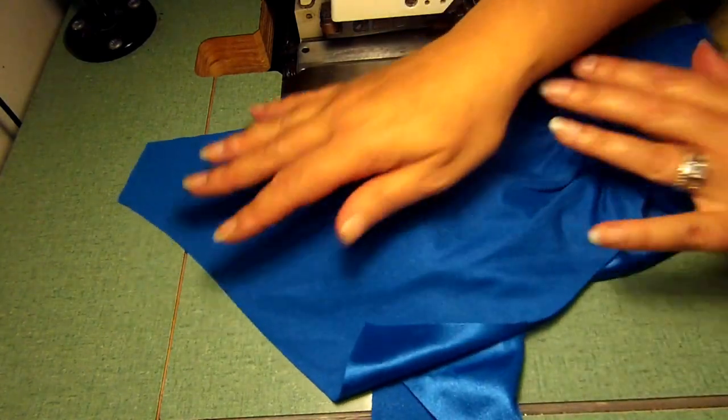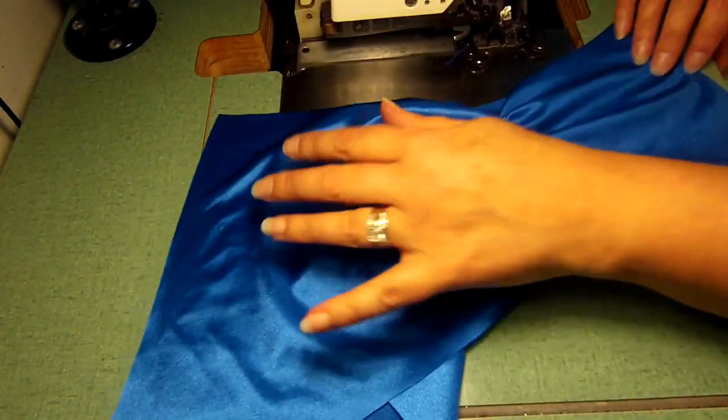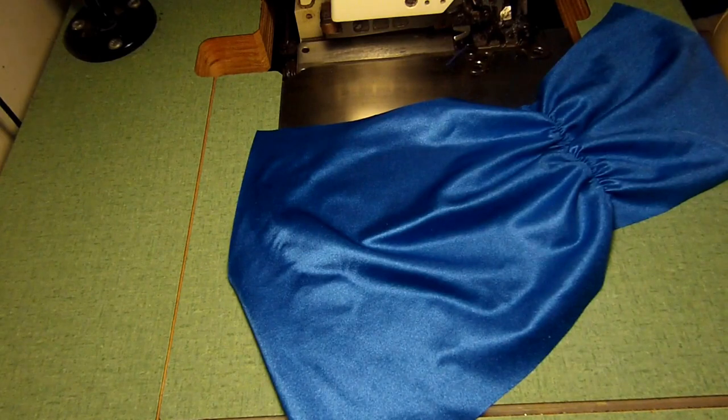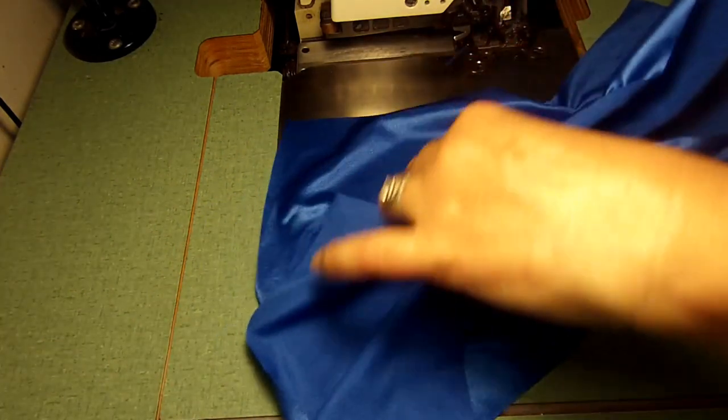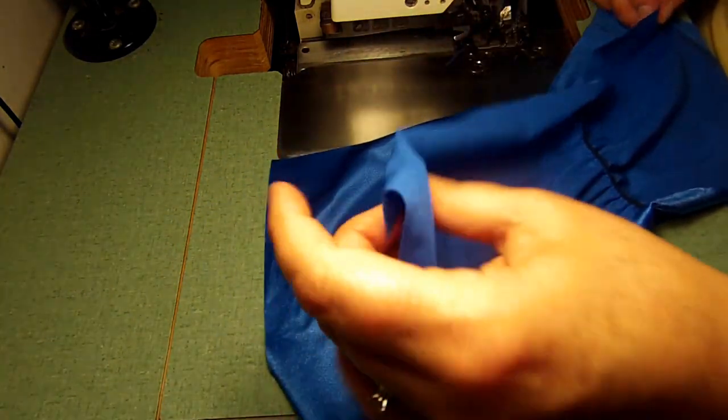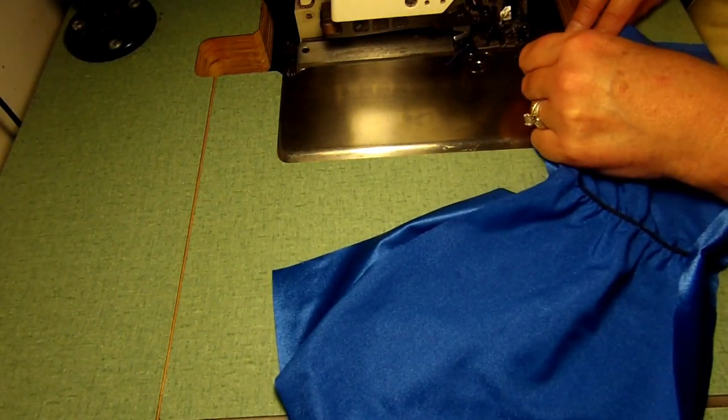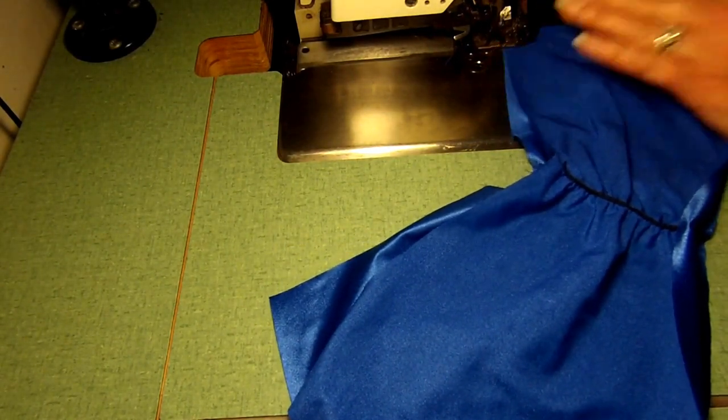At the serger, you're going to put the two right sides together. In my case it's the shiny sides, but not all lycra is shiny. You're just going to hem or serge together the front and the back.